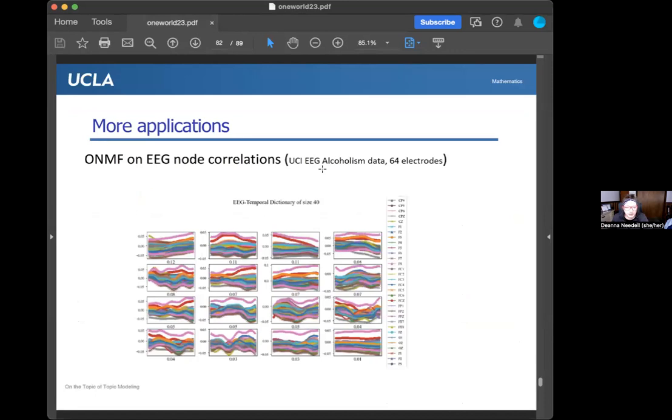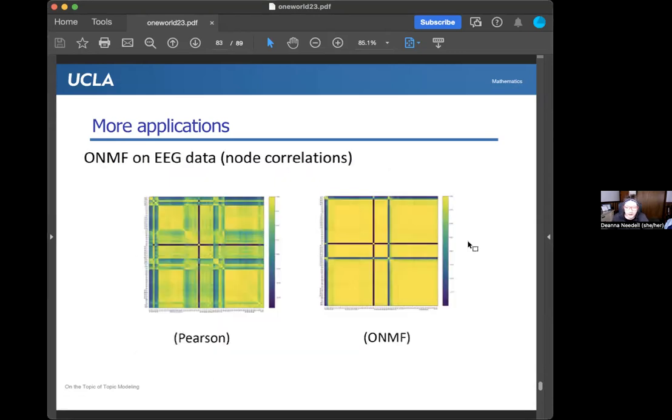Lots more applications. This is looking at EEG data. This is from the UC Irvine EEG alcoholism data set. There are 64 electrodes. The goal is to try to differentiate patients with alcoholism from patients without, just given their EEG recordings. You're looking at the atoms that we learned from that EEG data. There are so many electrodes here, it's kind of hard to make sense of, although it's pretty rainbow. But we got some interesting results.